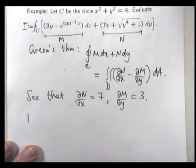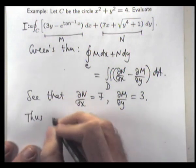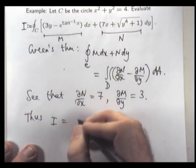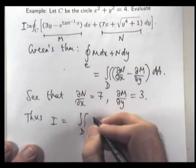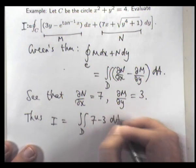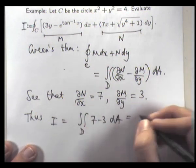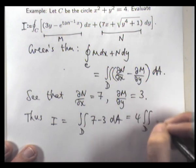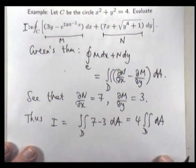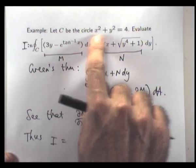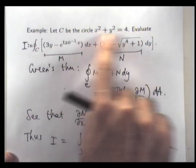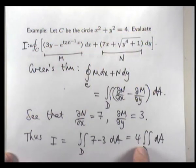So it's going to be 7 minus 3 dA. So if our region D is contained in this circle, it's just 4 times the area of that circle, right?